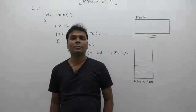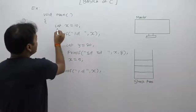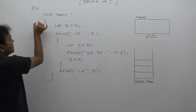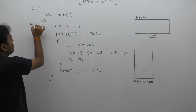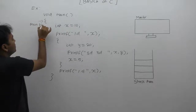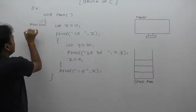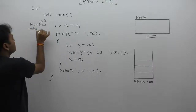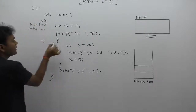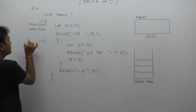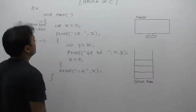In this example, we are declaring two different variables inside different blocks. With respect to the main function, the main function's block can be considered as the outer block. Inside the main block, we are creating one more block, which is considered the inner block. We are declaring two different variables in these different blocks.